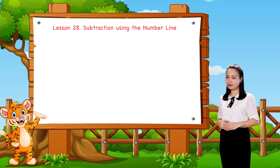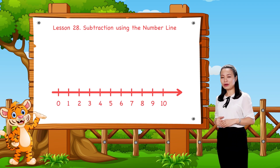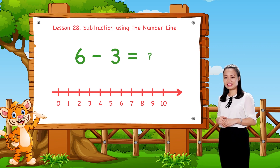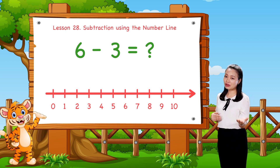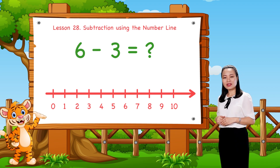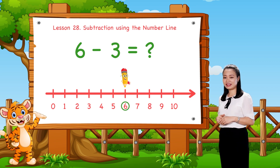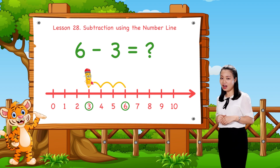How to do subtraction using the number line. For example, how to find 6 minus 3 using the number line. Let me show you how to find 6 minus 3. We start from number 6, then jump 3 numbers to the left. Then, see the number where we land to find the difference.